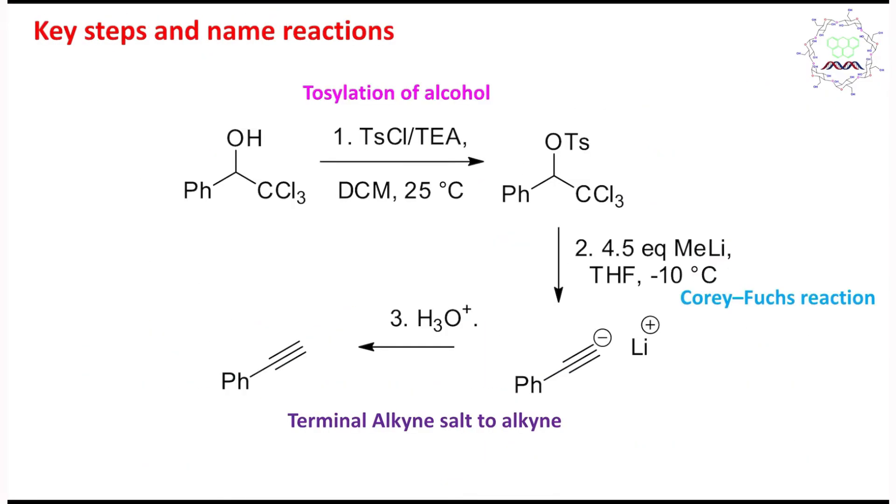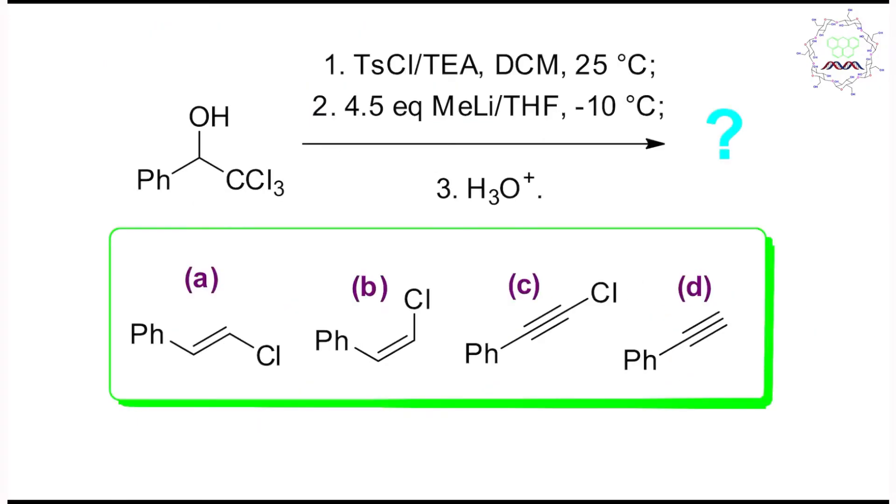What is the key steps and name reaction? Tosylation of alcohol first step. Second step is this, actually Corey-Fuchs reaction. And ultimately these terminal alkyne generation by protonation of this corresponding salt. In this case, what is the answer? Obviously, option D is the right answer.